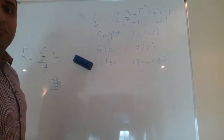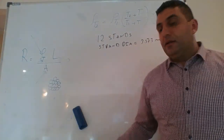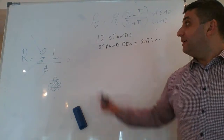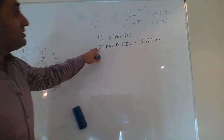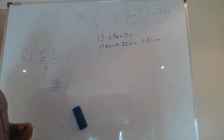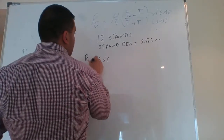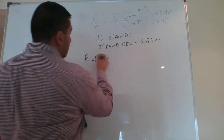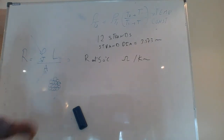Let's do an example. I have a copper conductor made of 12 strands; each strand has a diameter of 3.373 millimeters. I need to find the resistance R at 50 degrees Celsius for a length of one kilometer — that is, the resistance in ohms per kilometer.